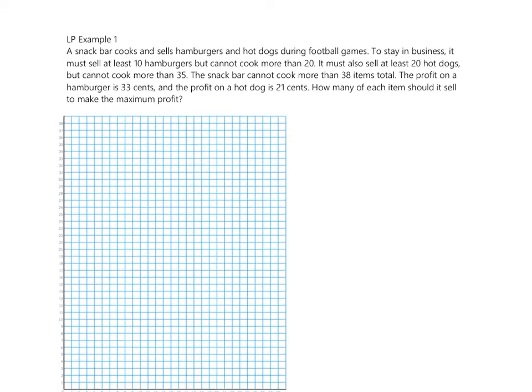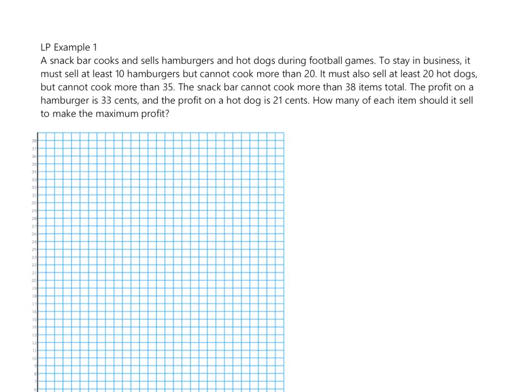The first thing we're going to do is decide what our variables are. We have hamburgers, which we'll call X, and we have hot dogs, which we'll call Y.